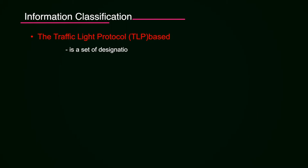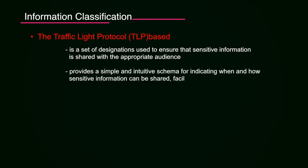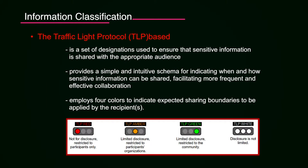There is an information classification system used by CSIRT across the globe — the Traffic Light Protocol (TLP). It is used to ensure that sensitive information is shared with appropriate audiences only. It provides a simple and intuitive schema for indicating when and how sensitive information can be shared, and with whom you can share information about an incident or the content of an email or document. It uses four colors to indicate expected sharing boundaries to be applied by the recipient.